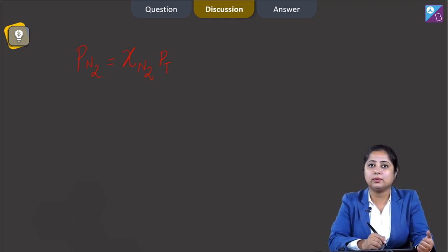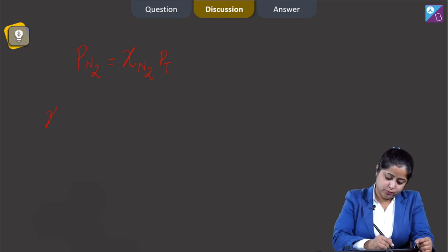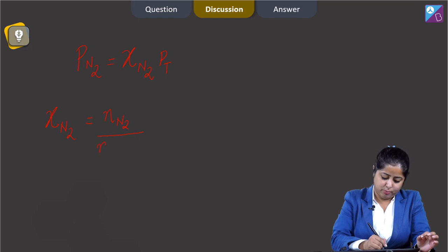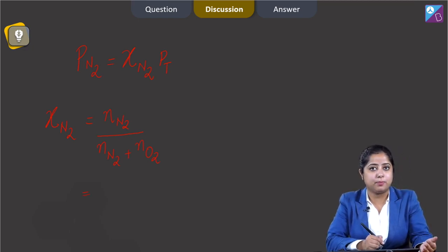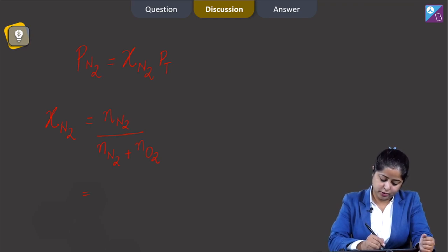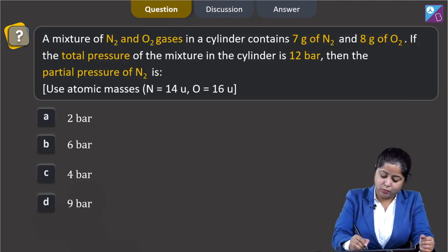First we will calculate the mole fraction of N2. Mole fraction of N2 equals number of moles of N2 upon total number of moles of all the gases. Since number of moles equals given mass upon molar mass, given mass of N2 is 7 and molar mass of N2 is 28.